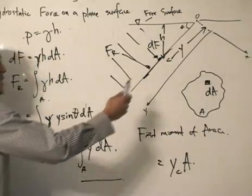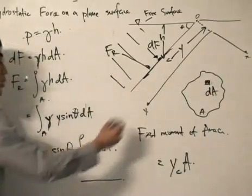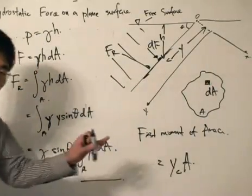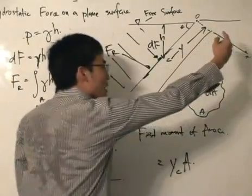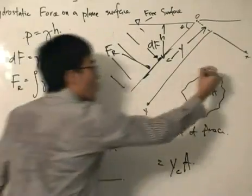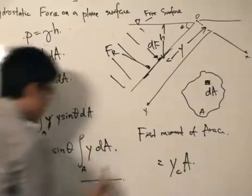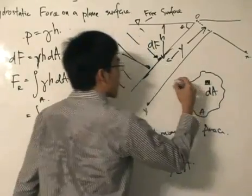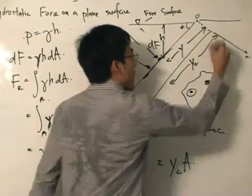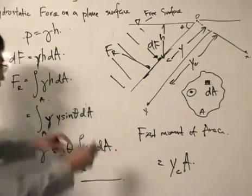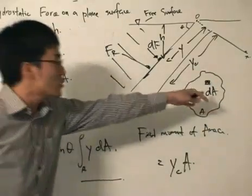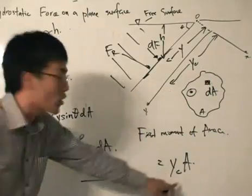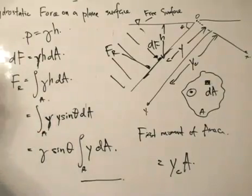The first moment of area is linked with the y-coordinate of the centroid multiplied by the total area. Basically, what it means is that we are taking a small area of the shape multiplied by its y-coordinate, taking moments around the x-axis. The moment of the individual forces gives us the moment of the whole area multiplied by one y-coordinate — the centroid. So the integral of y dA equals yc times A.